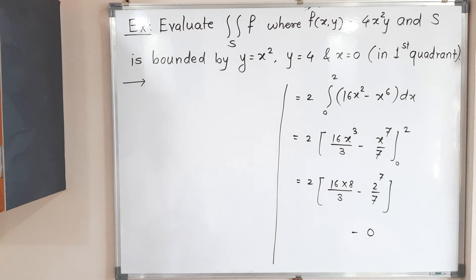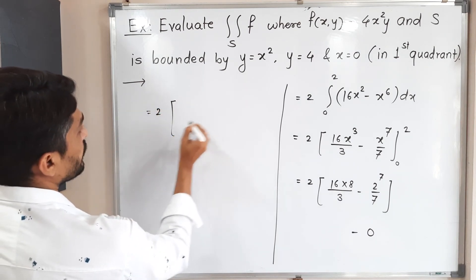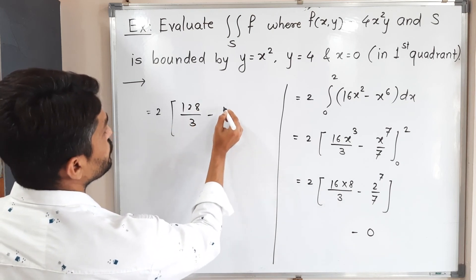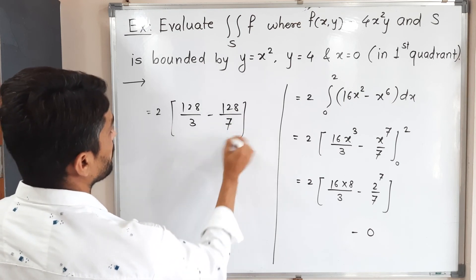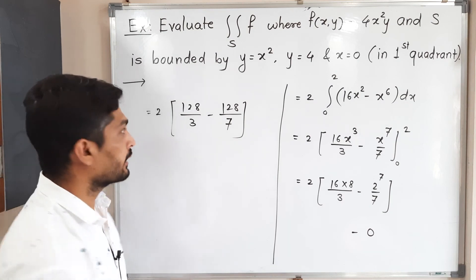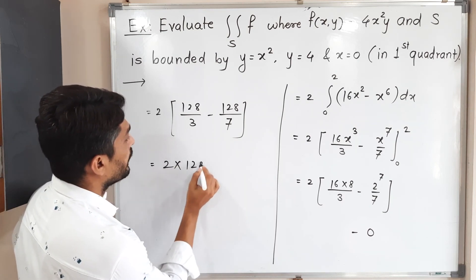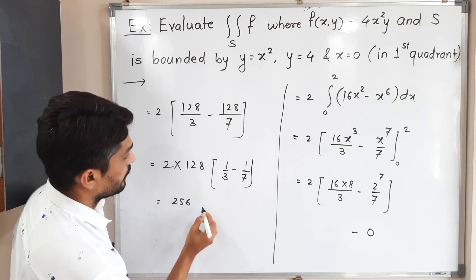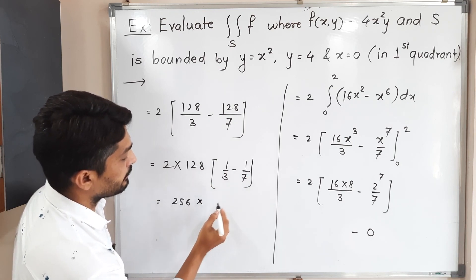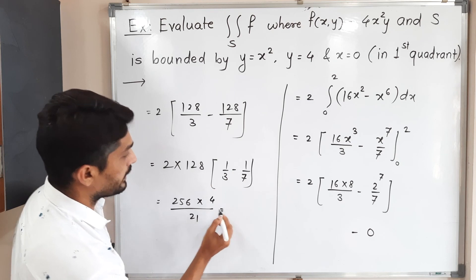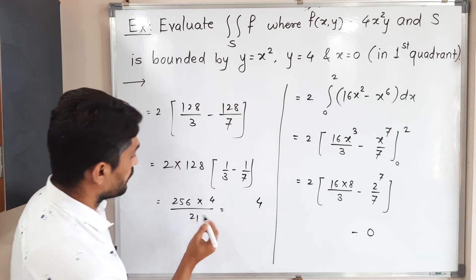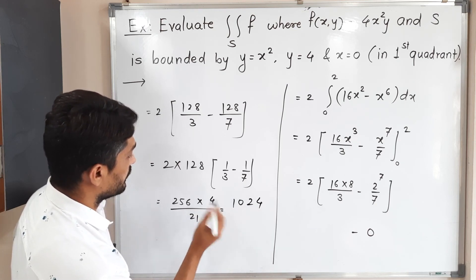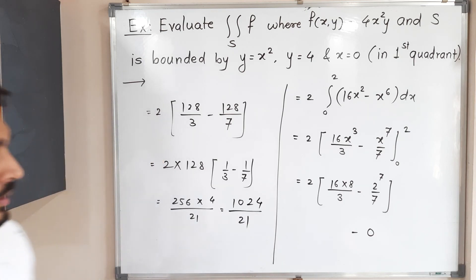So this equals 2 times 128 times (1/3 − 1/7), which is 256 times (7 − 3)/21, giving 256 times 4/21. Simplifying, we get 1024/21. This is the required answer.